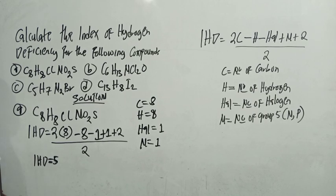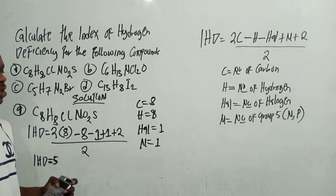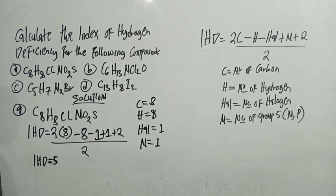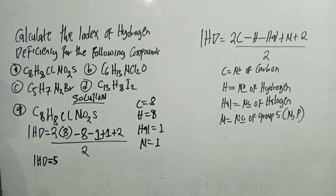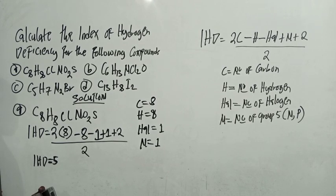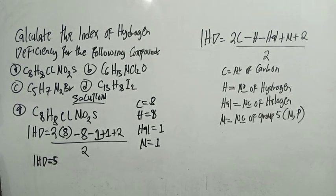IHD equals 5, meaning the degree of unsaturation is 5. Now, when you calculate IHD and it gives you 0, it means the compound does not contain a double bond, a triple bond, or a ring — the compound is fully saturated.